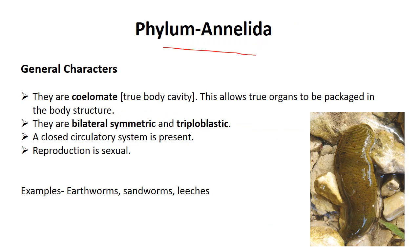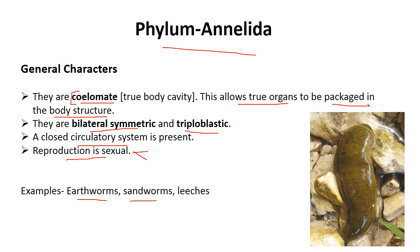Next is phylum Annelida. Phylum Annelida are true coelomates — this is the first phylum to have a true coelom, which allows true organs to be packed in a body structure. They are bilaterally symmetrical and triploblastic, with a closed circulatory system. Reproduction is totally sexual, but they are hermaphrodites — both sex organs are present in a single body. Examples: earthworm, sandworm, and leeches.